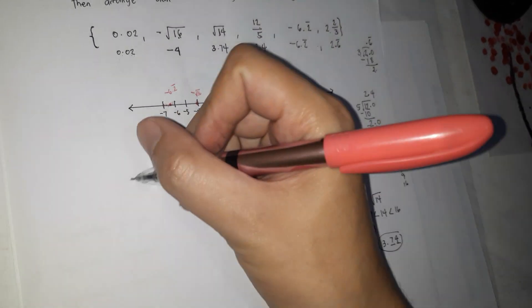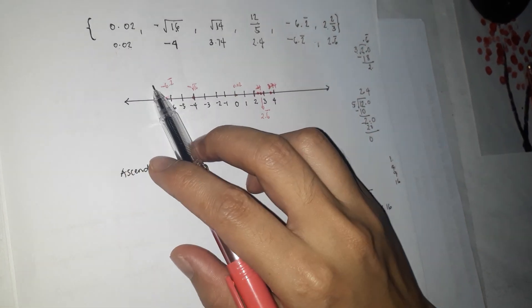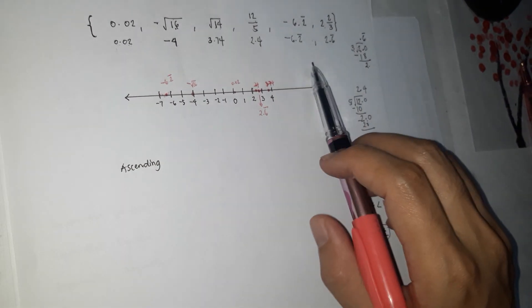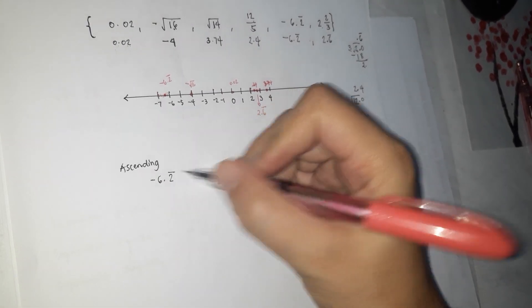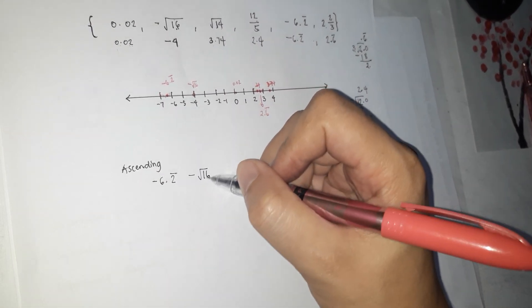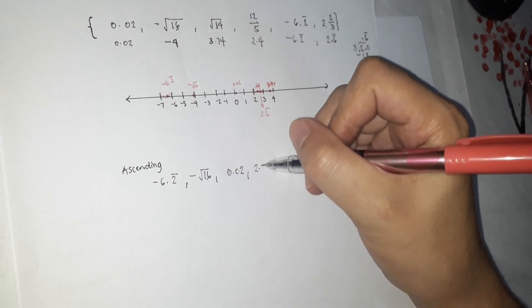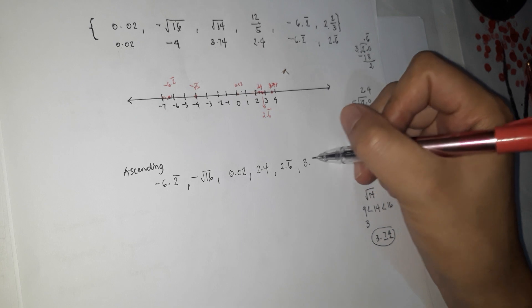Ascending order means arranging from smallest to greatest. So the ascending order is: negative 6.2 bar, then negative square root of 16, then 0.02, then 2.4, then 2.6 bar, and the greatest number is square root of 14, which is approximately 3.74.